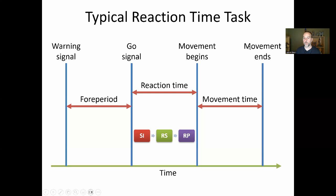Movement ends when the sprinters cross the finish line, and movement time is the duration from movement beginning to movement ending. The time from the go signal to crossing the finish line is total response time — reaction time plus movement time. A sprinter tries to minimize both. The movement time is the larger contribution — maybe 10 seconds for an elite sprinter — but reaction time, maybe around 100 milliseconds, is also important.